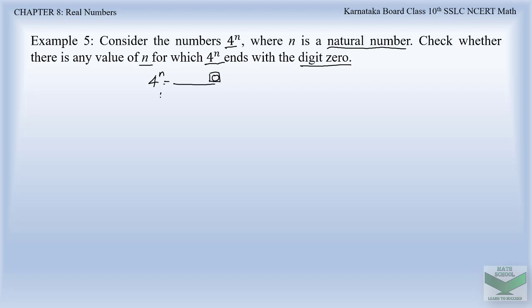Here n can be any natural number like 1, 2, 3, and so on. For example, if we give n as 1, 4 power 1 we get 4. If we give n as 2, 4 squared will be 16. If we give n as 3, 4 into 4 into 4 is 64. We need to find a value of n such that the resulting number has the last digit as 0.